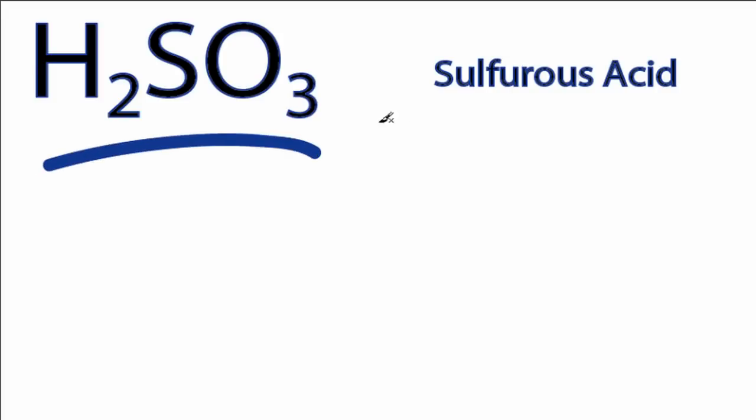This is the H2SO3 Lewis structure, sulfurous acid. The key to understanding this Lewis structure is to recognize these two H's in front attached to a polyatomic ion. That makes it an acid.